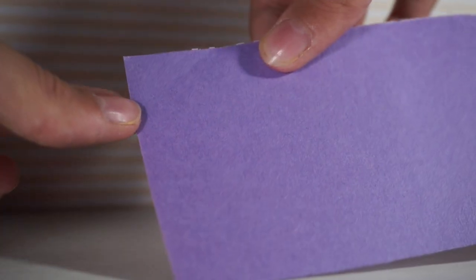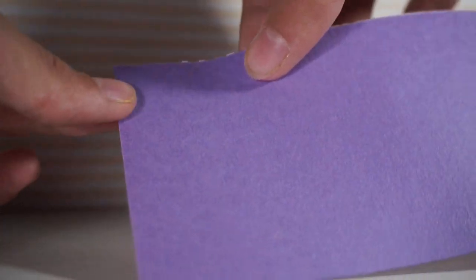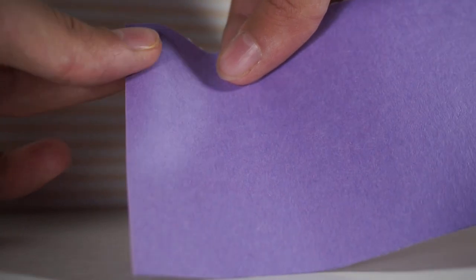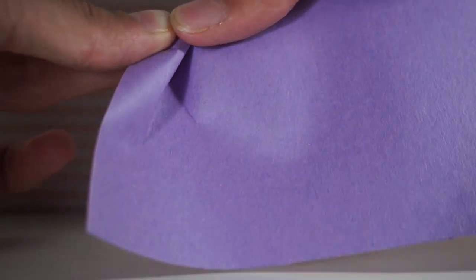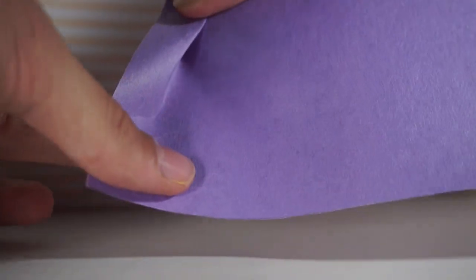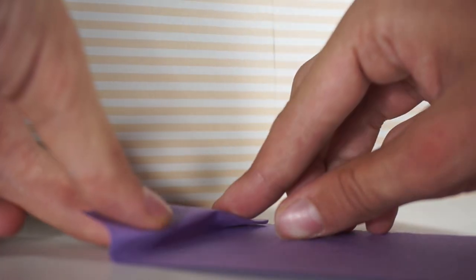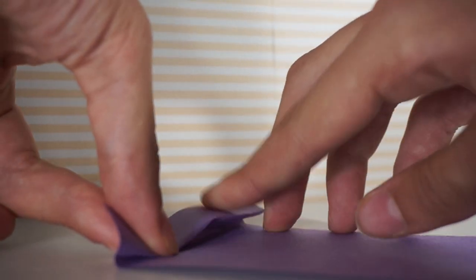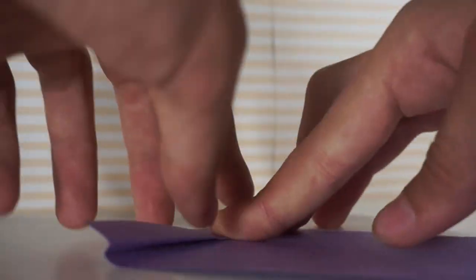All right, once you cut that out you need to pleat it. How you pleat something is you take a portion of the fabric or in this case paper and you fold it over itself like this and then line it up so that there is a little ruffle. Since this is paper not fabric I would suggest creasing it all the way down to make it lay flat.